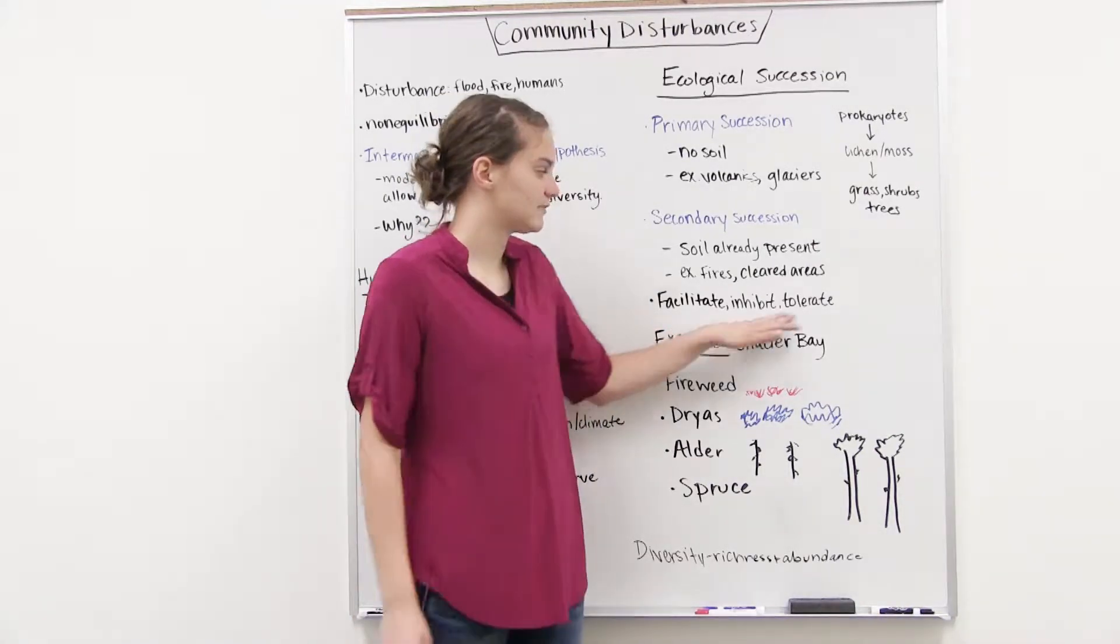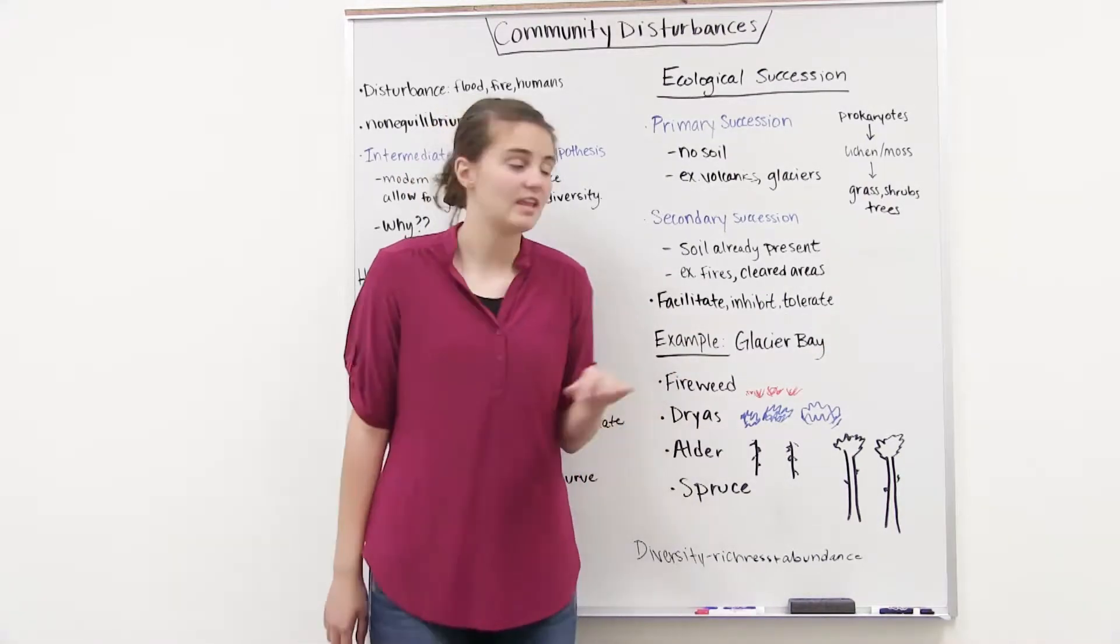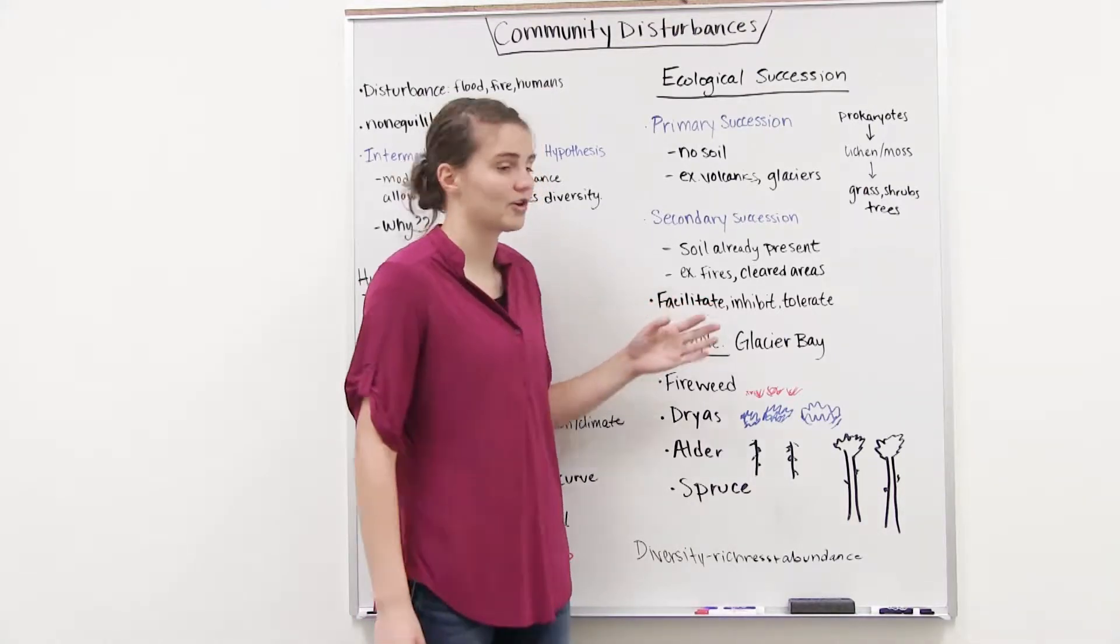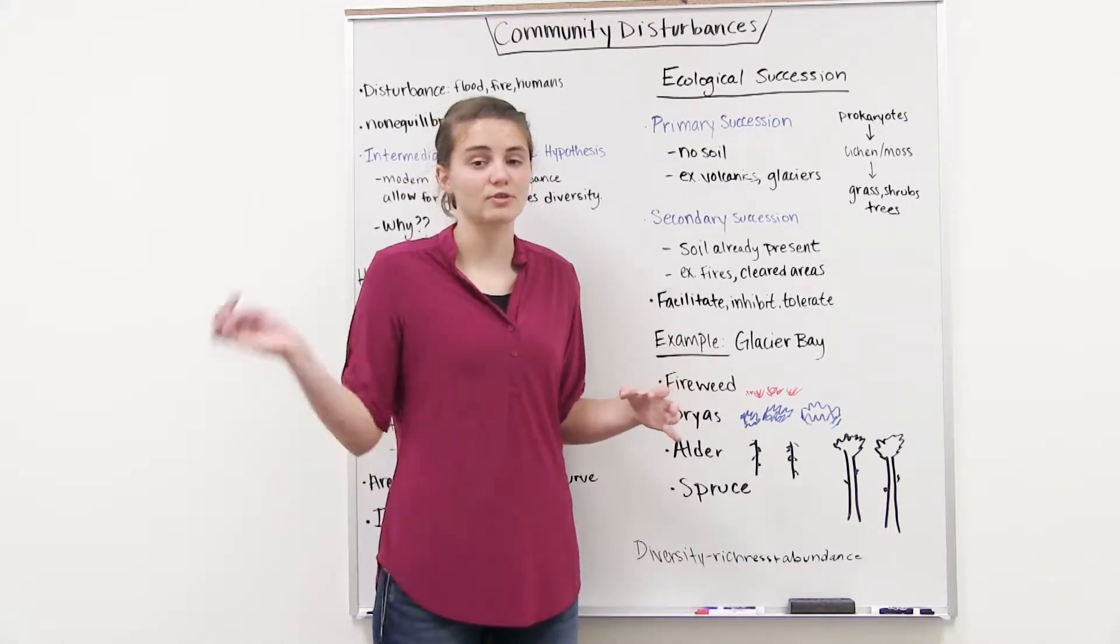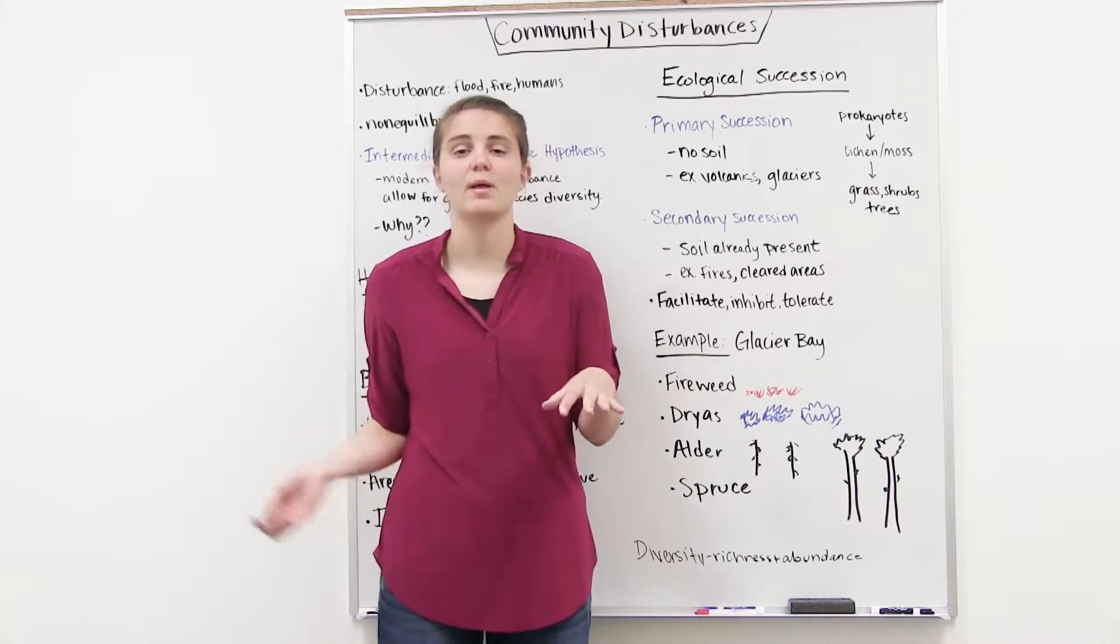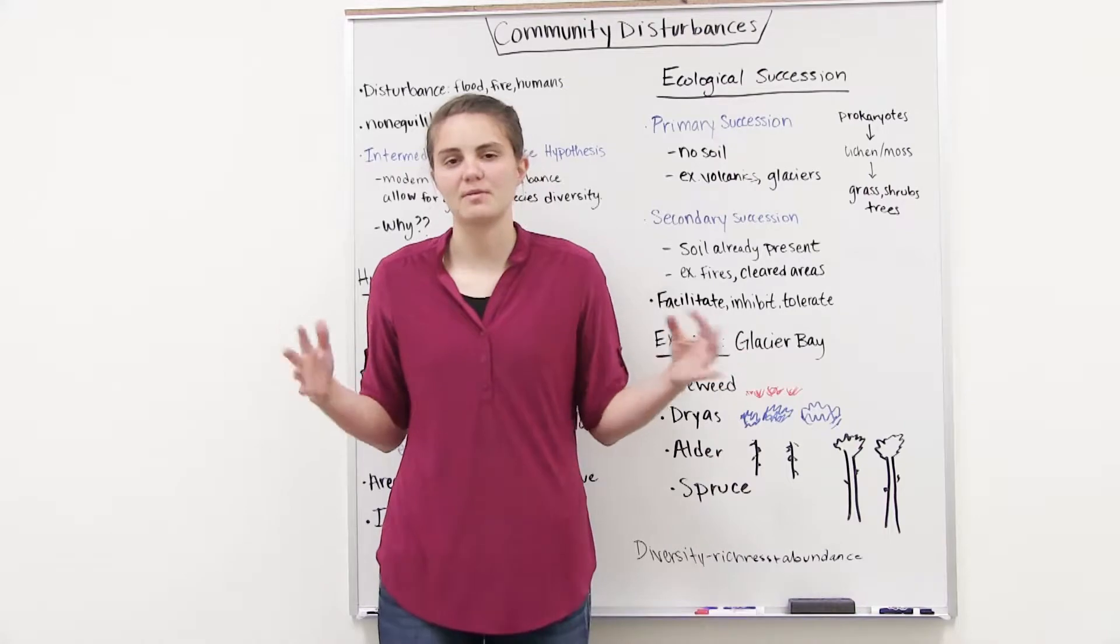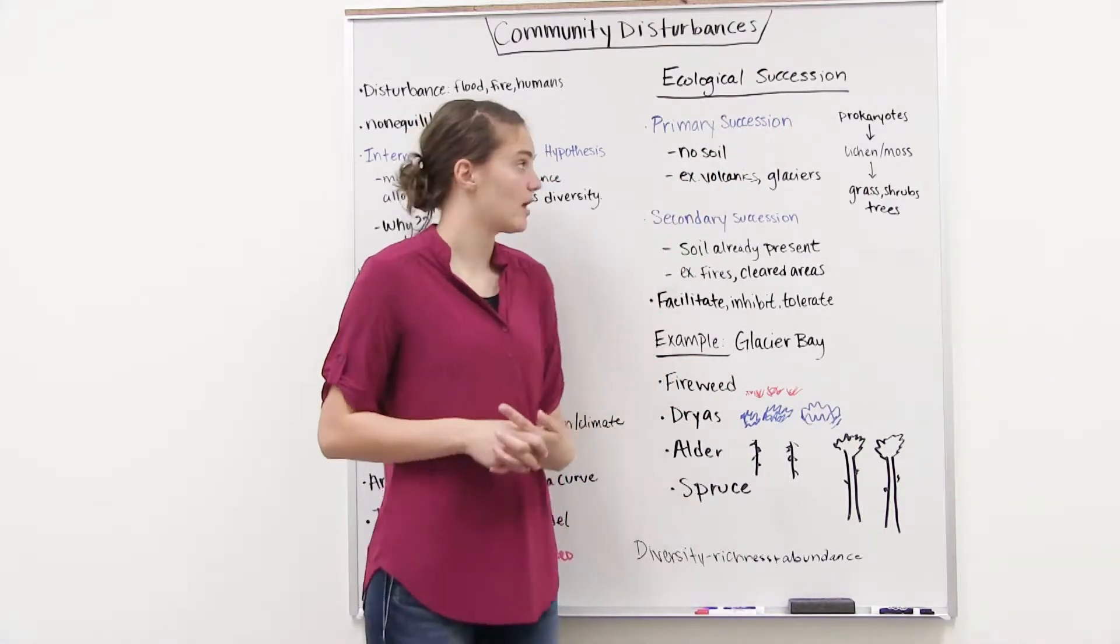And so the different species that will come in, they can have different interactions with the future species that will come in. They can either facilitate, inhibit, or tolerate the next species that come in. So if they facilitate it, they're going to do something to the environment that allows for another species to come into the community. If they inhibit it, they're going to prevent other species from coming to the community, but they'll eventually be able to overcome those things they're inhibiting, or they'll tolerate them—they're going to be independent of the new succeeding species that come in.